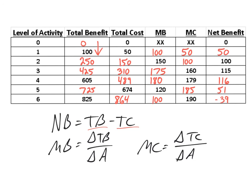So that's how we'd solve a problem like this. The next question is: what is the optimal level of activity? There are a couple of ways to find this — one is to find where net benefit is largest, the greatest gap between total benefit and total cost. Or you can find where marginal benefit and marginal cost are equal or almost equal to each other. In both instances, that is at four units of activity, where net benefit is largest at 116 and where marginal benefit and marginal cost are closest to one another.